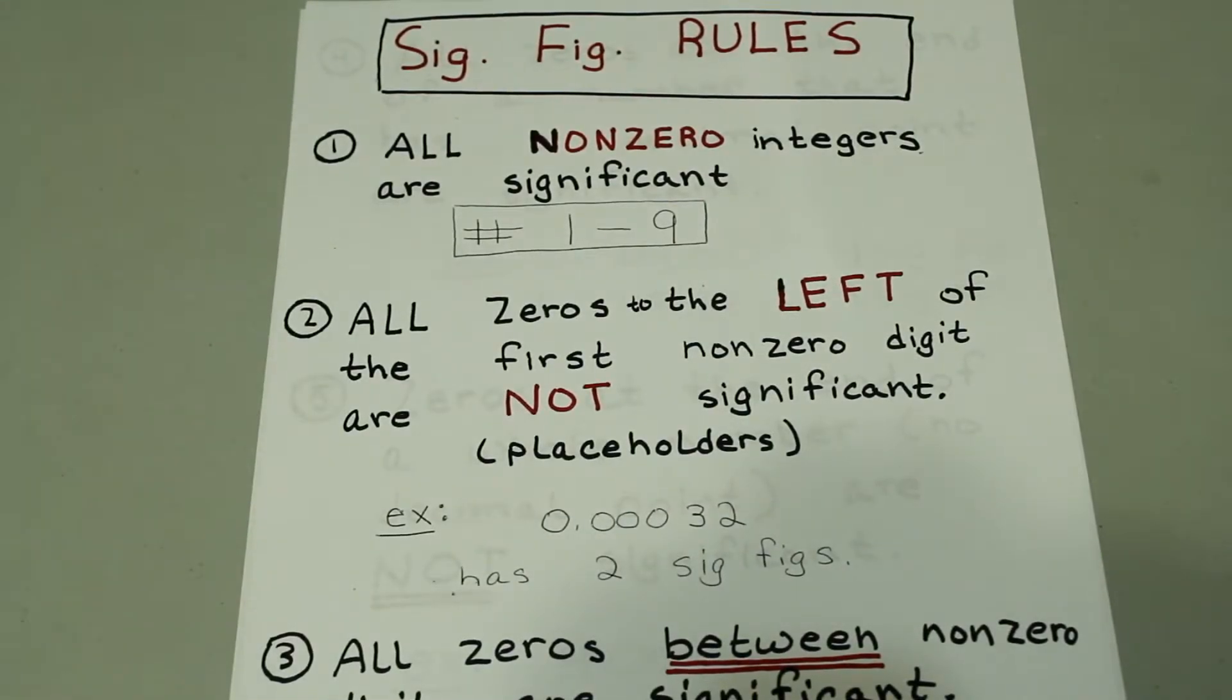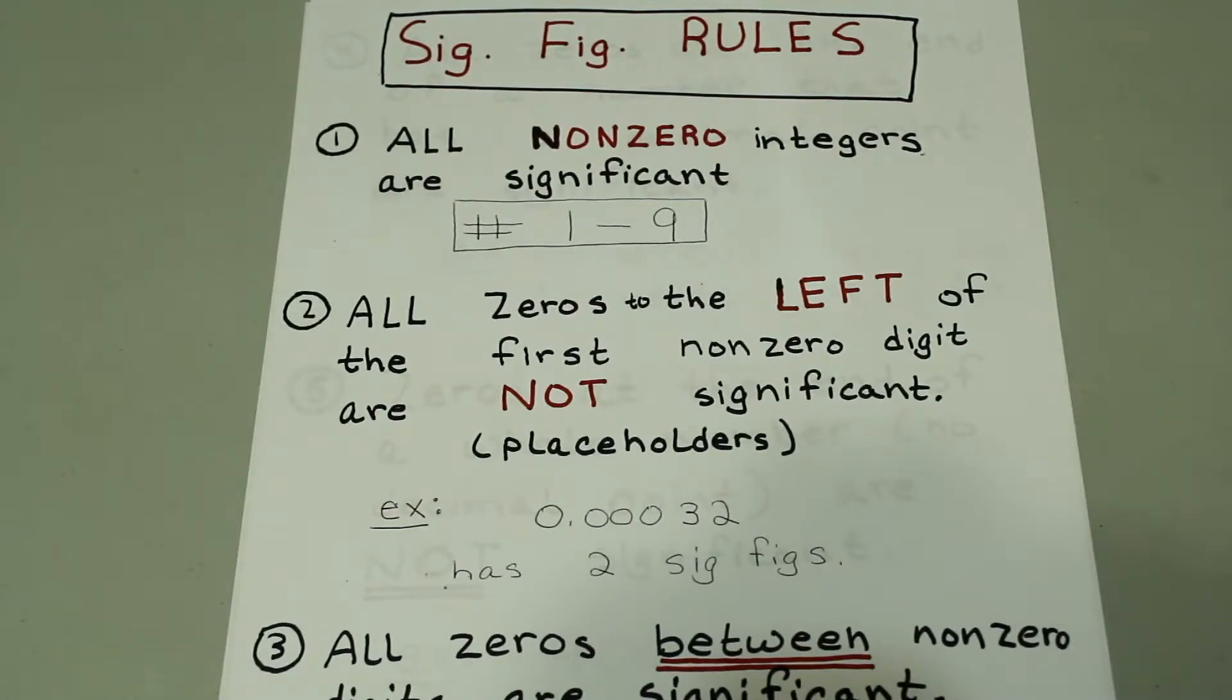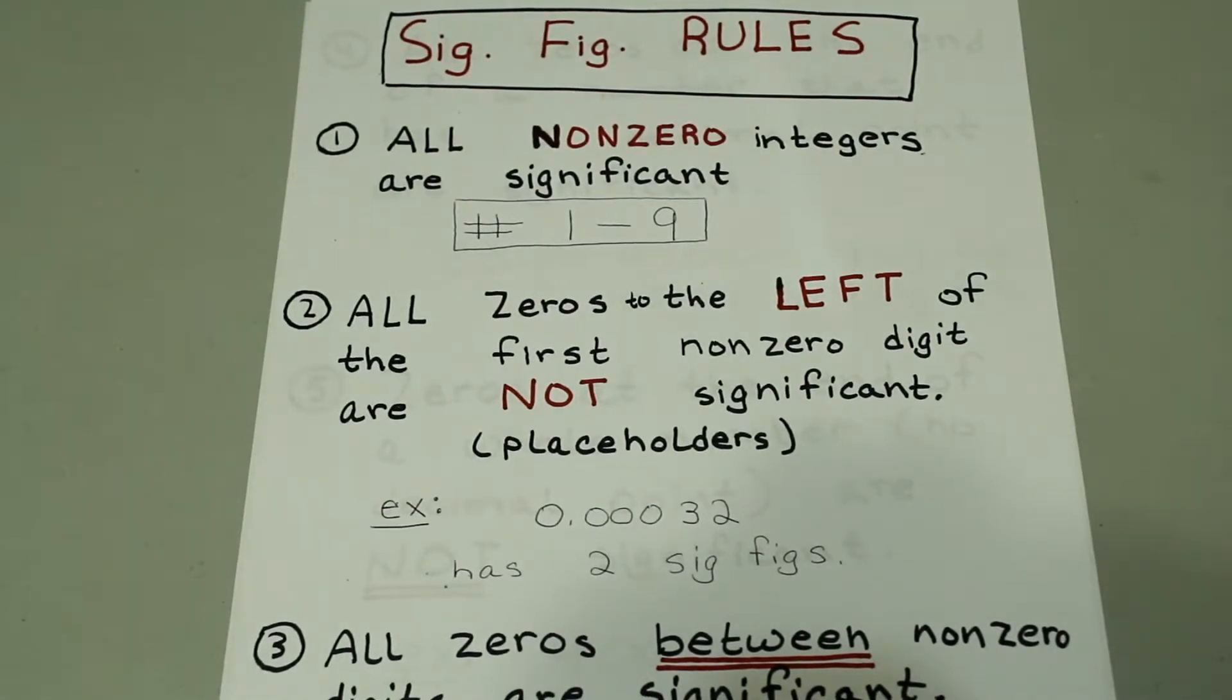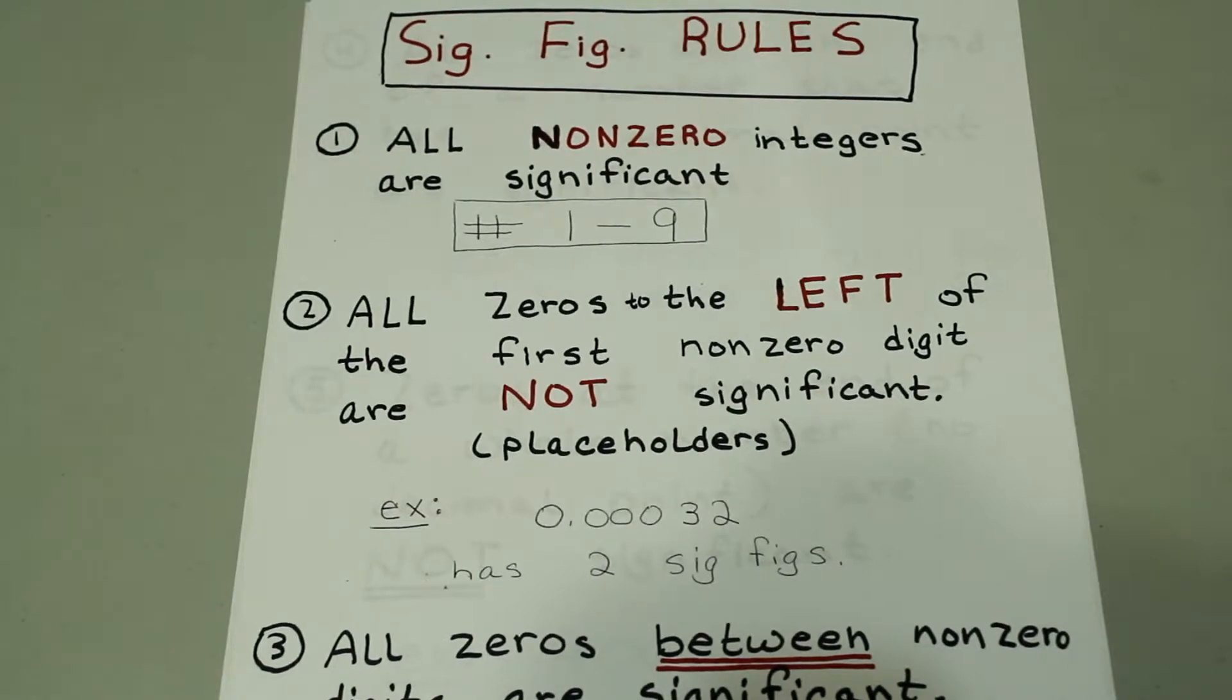So some of the rules for significant figures are, number one, all non-zero integers are significant. So any numbers between one and nine are significant. So those are one, two, three, four, five, six, seven, eight, nine. All those numbers are significant.